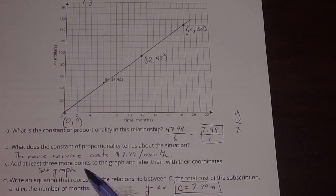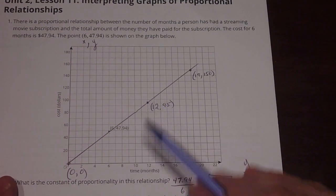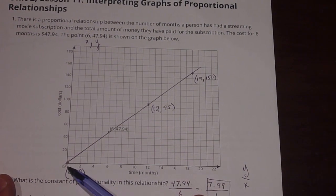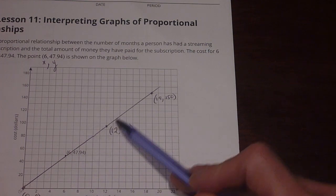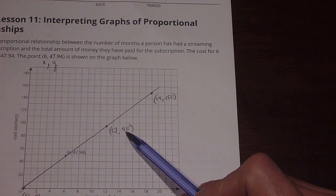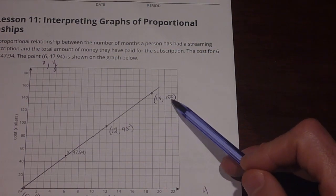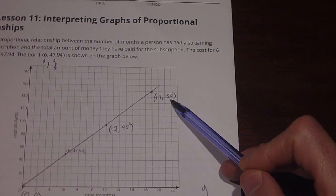Part C says, add at least 3 more points to the graph and label them with their coordinates. So what they're asking us to do is to figure out how much money we're going to spend on this movie streaming service at different times. So first off, I went down here and I said, well, if we never sign up for the movie service at zero months, we're going to spend zero dollars. So that's a way to consider saving money by not signing up for something. Then if we double the six months out to 12 months, we're at $95. And I approximated that. It's not exactly $95, but it's just about $95. And then further on, at 19 months, we would have spent $150 on the streaming service.